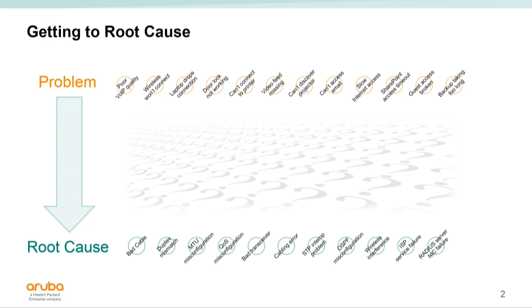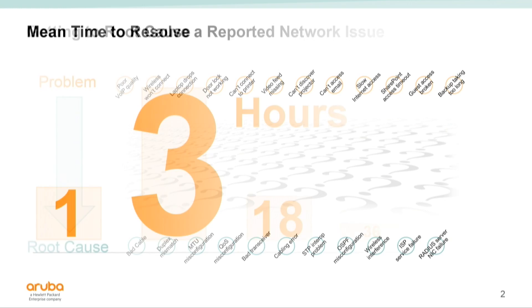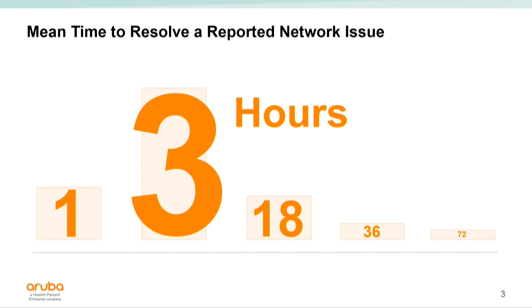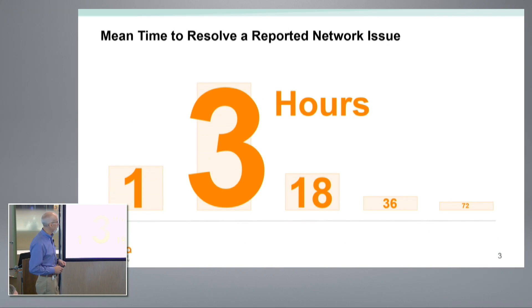The challenge we face as network operators is: how do we take those problems that come in from the help desk or through our monitoring and actually get down to the root cause so we can fix it and move on? This is the problem of getting from the presented symptom down to the root cause. When these things happen, people can be impatient — they expect things to work, and when they don't, they get irritated. Time is of the essence. I looked at some research and surveys and came up with a histogram of times it takes to fix a problem.